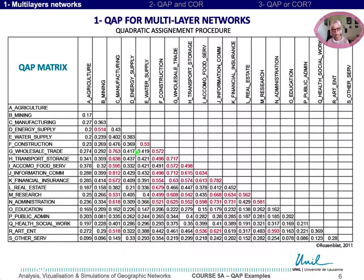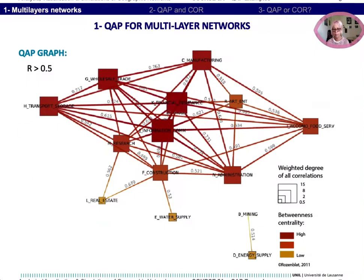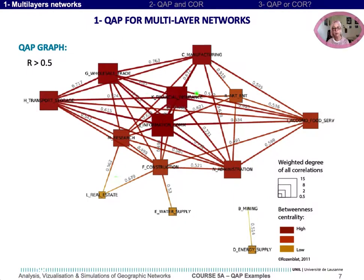Big cities are bigger in general. So we selected the highest correlations above 0.5, which are indicated in red. Then we built the graph of correlations between the activity matrices of cities. In this graph, a kind of degree of correlation for each activity summarizes each node's correlation — that is, each activity's correlation. We also calculated a kind of betweenness centrality in order to evaluate the most central activity networks of cities.